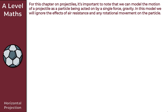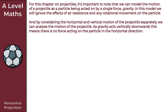In this video we're going to take a look at horizontal projection. For this chapter on projectiles, it's important to know that we can model the motion of a projectile as a particle being acted on by a single force, which is gravity. In this model we will ignore the effects of air resistance and any rotational movement on the particle. By considering the horizontal and vertical motion separately, we can analyze the motion of the projectile.